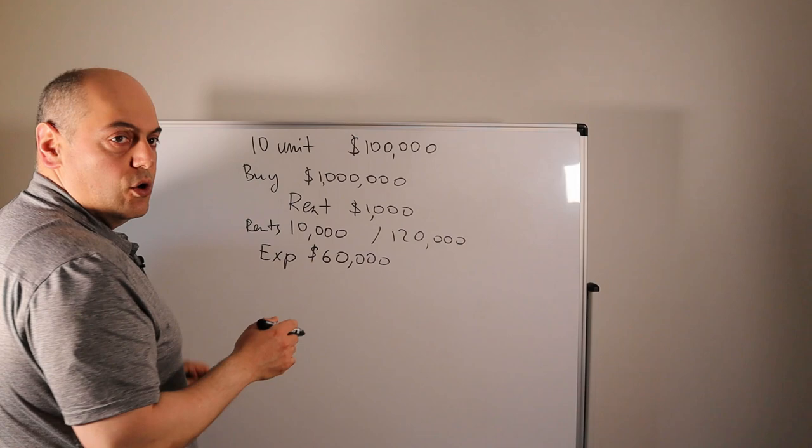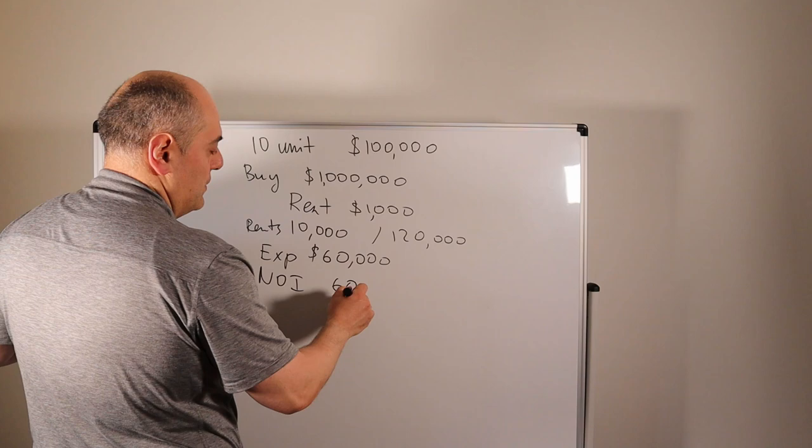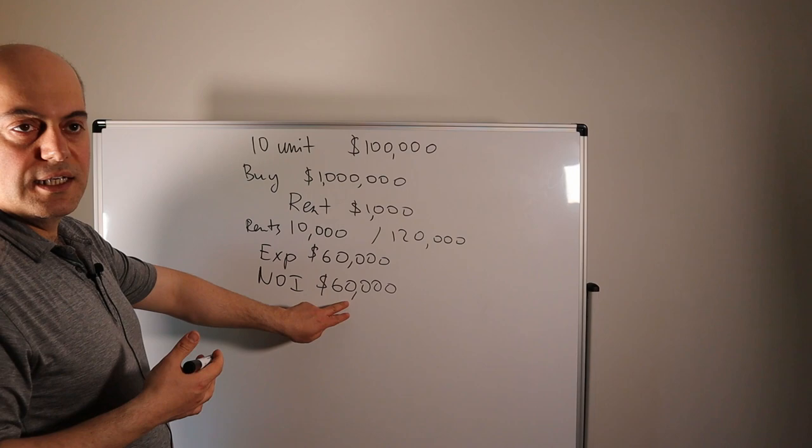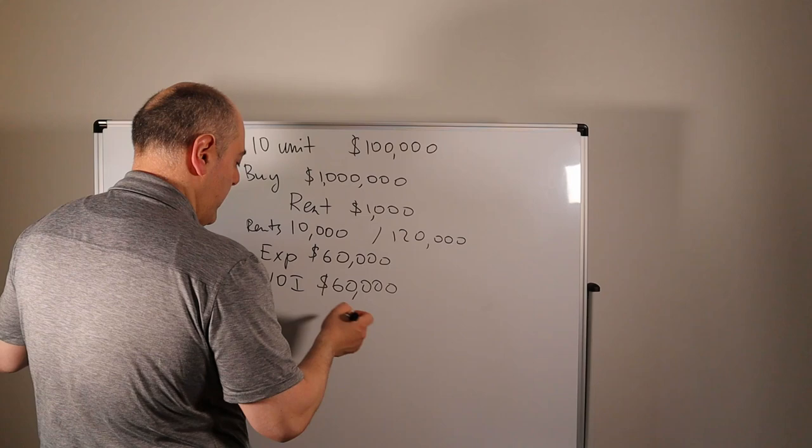Now if you have a debt on the deal you have to pay the mortgage out of this sixty thousand bucks. So let's assume your annual mortgage is forty thousand bucks. So you pay the mortgage.